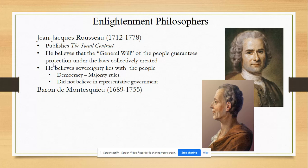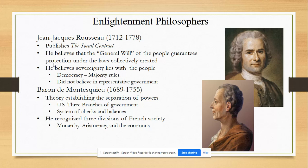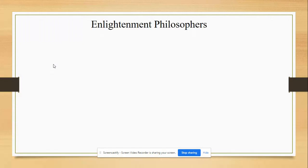Montesquieu — big on separation of powers. The three branches of government in the United States is a great example of what Montesquieu is talking about. If we separate powers, it makes despotism less likely. We can still centralize power, but if we separate it out into different branches, each branch can check the other's power — this is the system of checks and balances. Montesquieu himself is also French, writing about the divisions in French society: the monarchy, the aristocracy, and the commons. He argues for separation of power in French government.